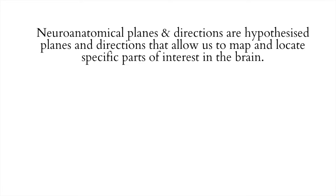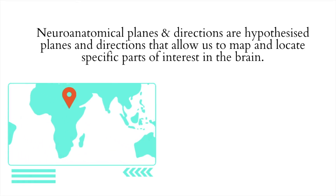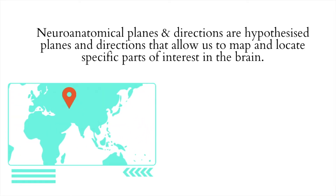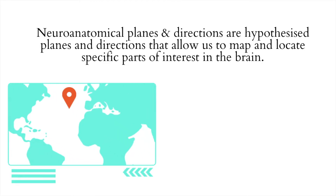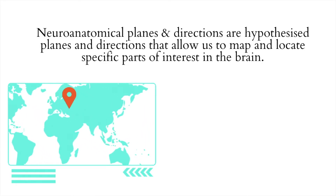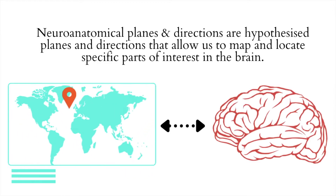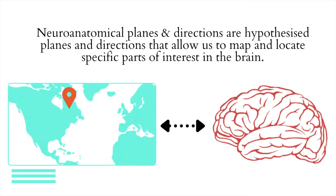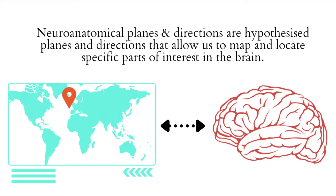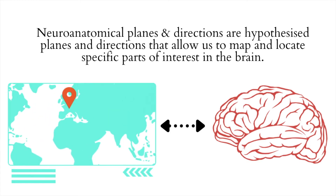Neuroanatomical planes are hypothesized planes and directions that allow us to map and locate specific parts of interest within the brain. Think of the analogy of a map that allows you to locate specific locations — say a country, a city, or a more immediate location in the neighborhood like a café. Neuroanatomical planes allow us to locate where a specific part of the brain lies.